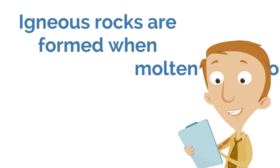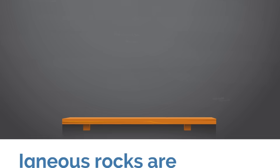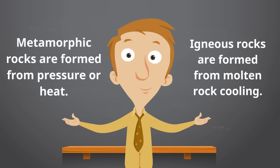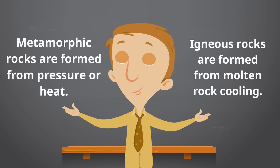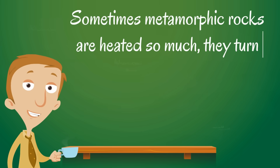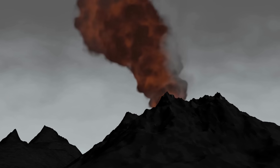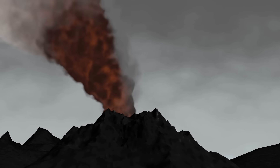Igneous rocks are formed when molten rock cools, and that molten rock can be magma or lava. Do you remember how metamorphic rocks are formed from pressure or heat? Well, igneous rocks are kind of the opposite — igneous rocks are formed from molten rock cooling. Sometimes metamorphic rocks are heated so much they turn into molten rock; when this molten rock cools, it becomes an igneous rock. A common place for igneous rocks to form is a volcano. The lava that erupts out of a volcano cools, but the magma below a volcano can cool as well, forming igneous rocks.